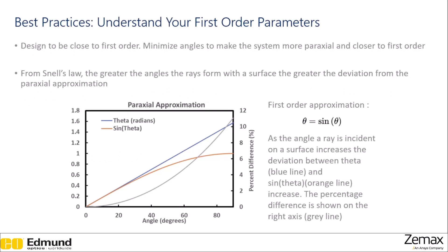Design your systems to be close to first order, which means minimizing angles to make the system more paraxial. Generally this will help minimize aberrations. This happens because we're making the approximation that theta, or the angle, is equal to the sine of the angle. If we look at how theta and sine of theta change as angles increase, this blue line here represents theta in radians and this orange line represents the sine of the angle. We see that as the angle increases, the difference between these two increases as well. This gray line represents the percent difference between the two, which increases greatly as the angle increases.